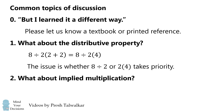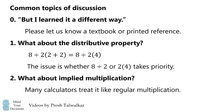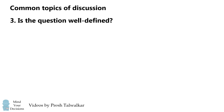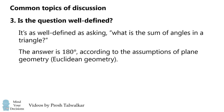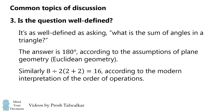What about implied multiplication? Many calculators will treat it like regular multiplication, as I'll show later in the video. Is the question even well defined? It's as well defined as asking what is the sum of angles in a triangle — almost everyone will answer 180 degrees, but that's only according to the assumptions of Euclidean geometry. Similarly, 8 divided by 2, parentheses 2 plus 2, equals 16 according to the modern interpretation of the order of operations. Just as there are non-Euclidean geometries, there can be other ways of interpreting this, but the modern interpretation is 16.